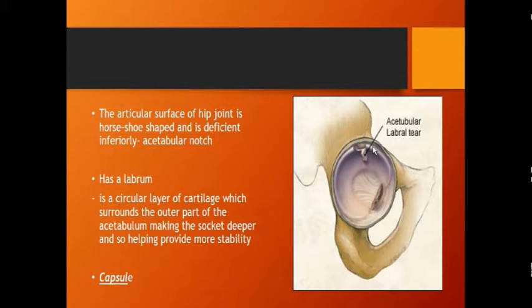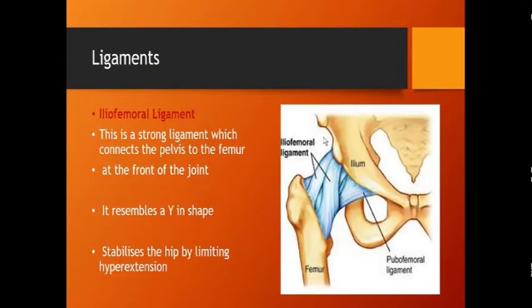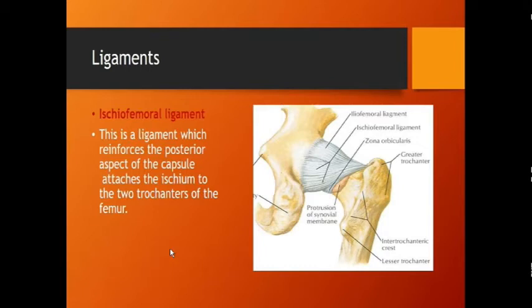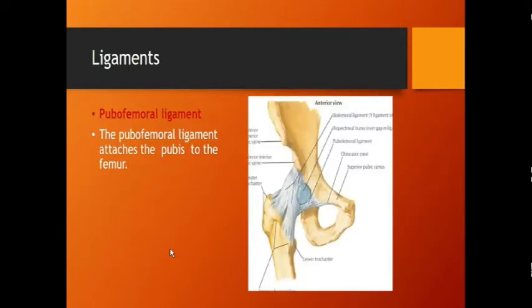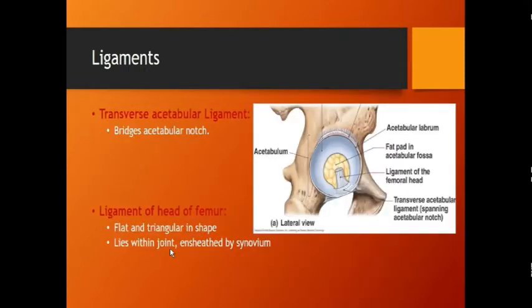The ligaments: anteriorly there is the iliofemoral ligament connecting pelvis to femur, resembling a Y-shape, stabilizing the hip by limiting hyperextension. Posteriorly is the ischiofemoral ligament. The pubofemoral ligament attaches pubis to femur. There are also the transverse acetabular ligament and ligament of the head of femur. All these ligaments function to support the hip joint and its complex movements.